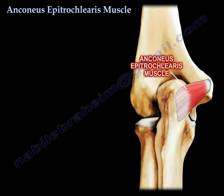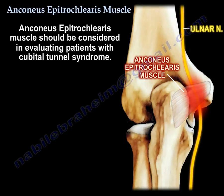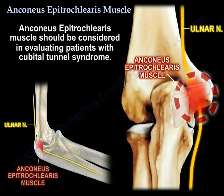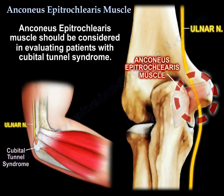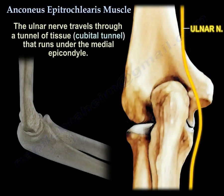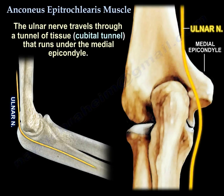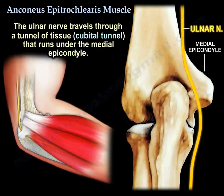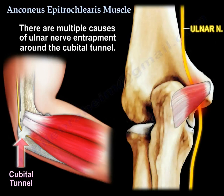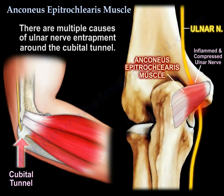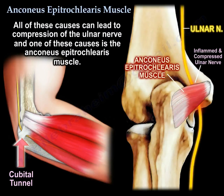The anconeus epitrochlearis muscle should be considered when evaluating patients with cubital tunnel syndrome. The ulnar nerve travels through the cubital tunnel, a tunnel of tissue that runs under the medial epicondyle. There are multiple causes of ulnar nerve entrapment around the cubital tunnel, and one of these causes is the anconeus epitrochlearis.